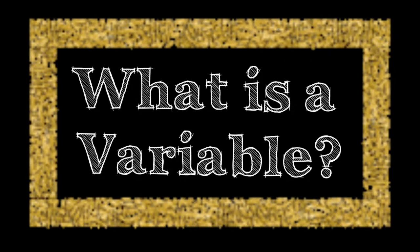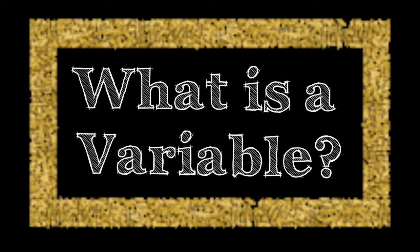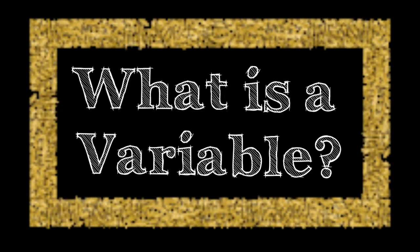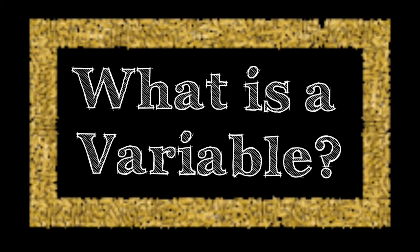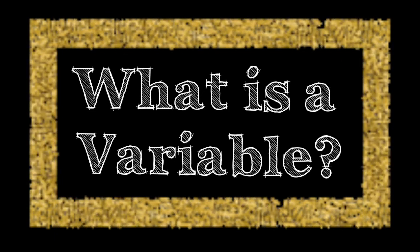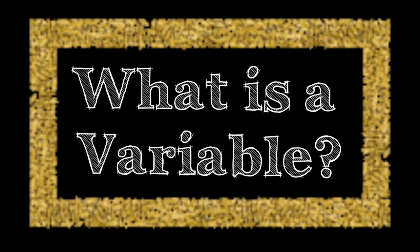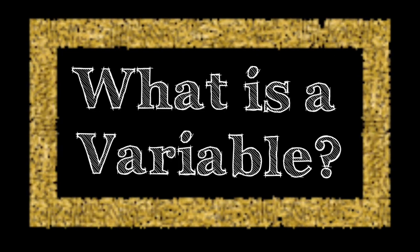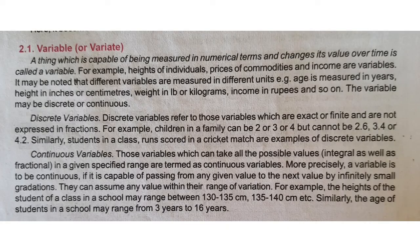Variables. A variable is a term which is often used in our mathematical sense and in economics we very often use the term variable. A variable is a thing which has the capability of changing its value from distribution to distribution or from one problem to another. So a variable is a thing which is capable of being measured in numerical terms and changes its value over time.